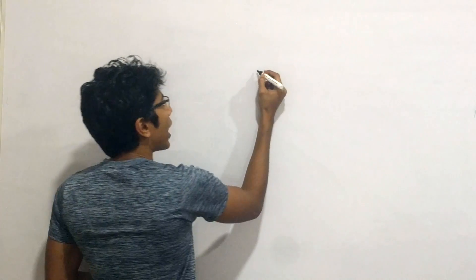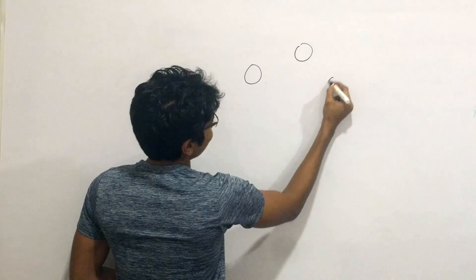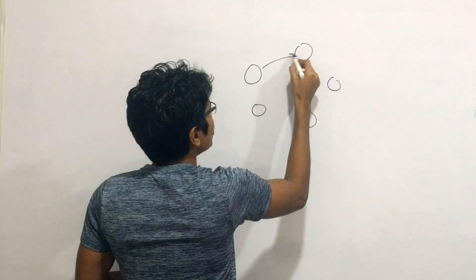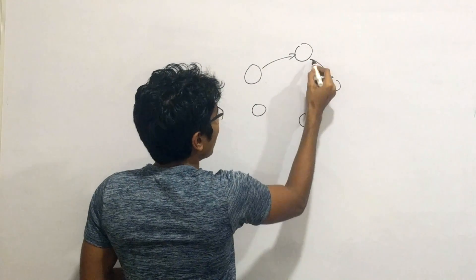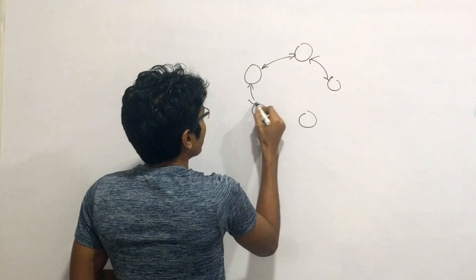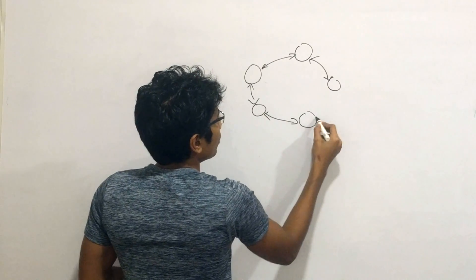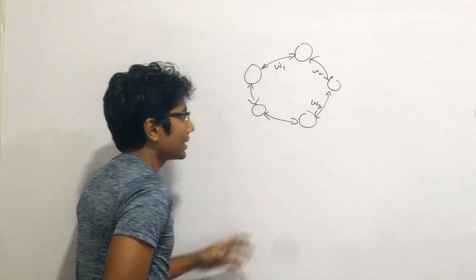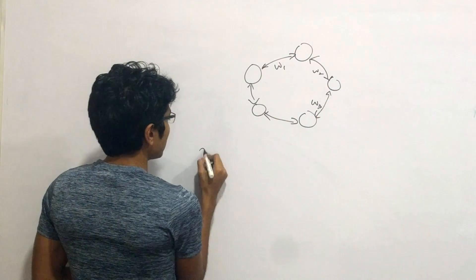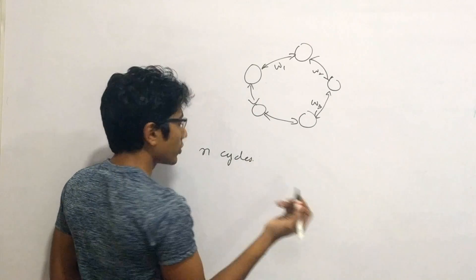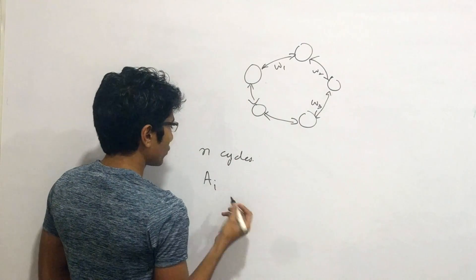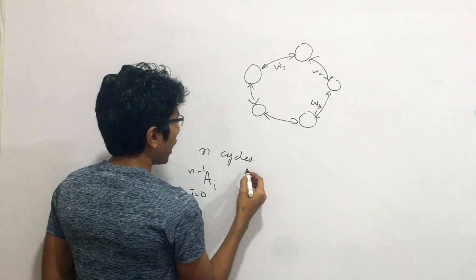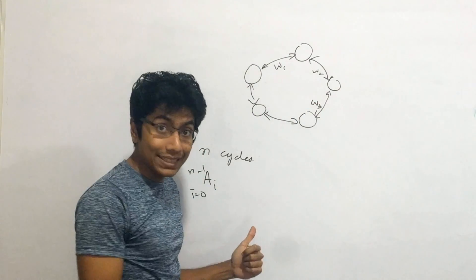So here's the problem. You have cycles as the problem suggests and each cycle is weighted. So every edge is undirected and each of them has weights — W1, W2, W3 and so on. This is not just one cycle; you have n cycles, each of them having size a of i, where i goes from 0 to n minus 1.